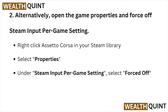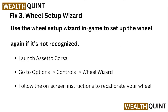Alternatively, open the game properties and force off the Steam input per-game settings. Right-click on Assetto Corsa in the Steam library, select Properties, and under the Steam Input per-game settings, select Force Off.